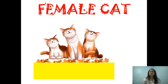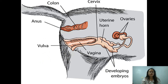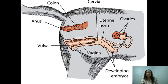Now let's discuss the reproductive system of a female cat. The female cat's reproductive system includes the cervix, the uterine horn, the ovaries, the developing embryos, the vagina, the vulva, and the anus. The frog, the human, the mosquito, and the cat all have ovaries in their female reproductive systems.